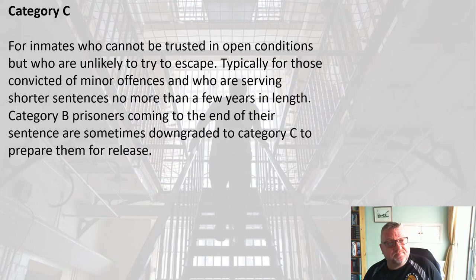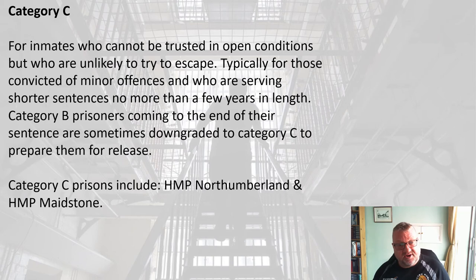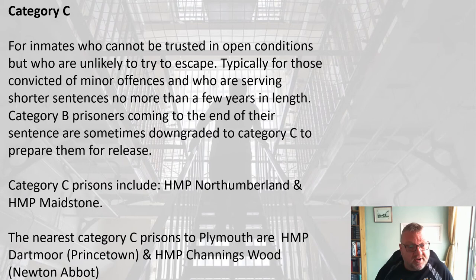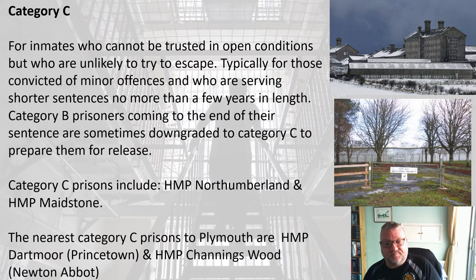Category C is for inmates who can't be trusted in open conditions but are very unlikely to try to escape. It's typically for those convicted of minor offences serving shorter sentences of no more than a few years. Category B prisoners coming to the end of their sentence might be moved down to Cat C to prepare them for release. Famous Cat C prisons include HMP Northumberland and Maidstone, with the nearest two locally being Dartmoor and Channingswood in Newton Abbot.